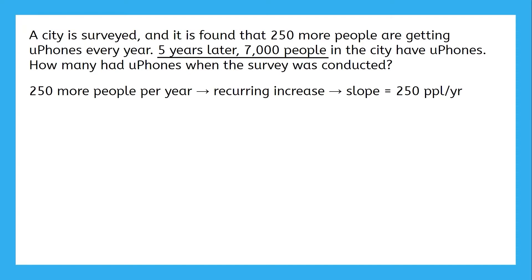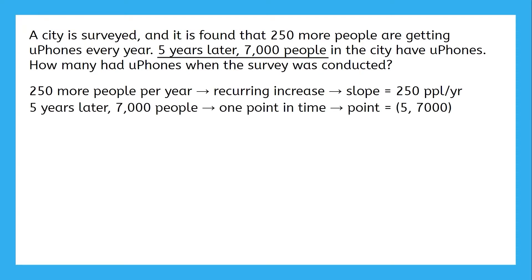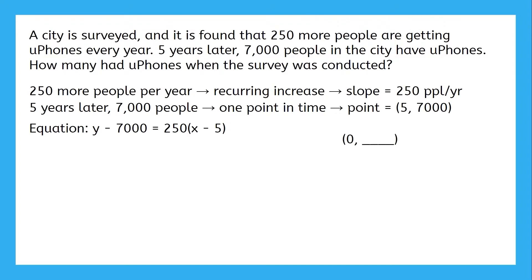Five years after the survey, we know how many people had uPhones. This is two connected values at a single time, so that's a point. With a slope and a point, it's easiest to set up an equation in point-slope form. The question asks how many had uPhones when the survey was conducted — in other words, zero years after — so it wants the y-intercept. All we have to do is plug in zero for x and find what y equals.